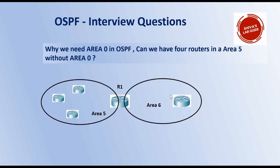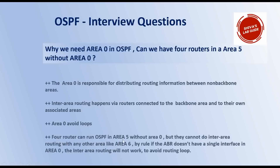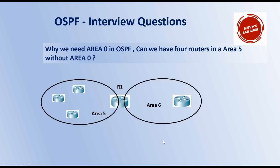Can four routers run OSPF in area 5 without area 0? If you have four routers in area 5, and one router also connects to area 6, routing within area 5 will work fine. But when you want to exchange routing between area 5 and area 6, it will not work unless R1, which connects area 5 and area 6, has at least one interface that is part of area 0. So four routers can run OSPF in area 5 without area 0, but they cannot do inter-area routing with area 6, because if an ABR doesn't have a single interface in area 0, inter-area routing will not work. This rule exists to avoid routing loops.